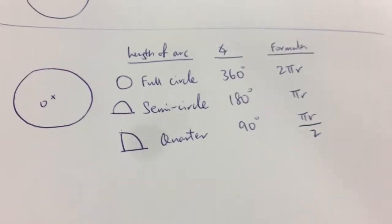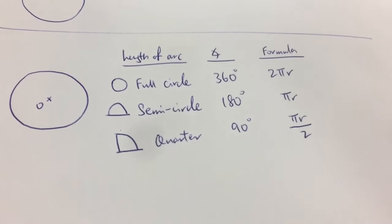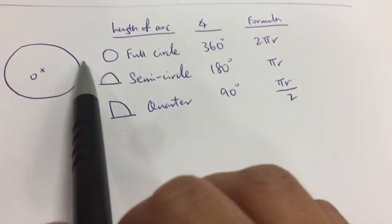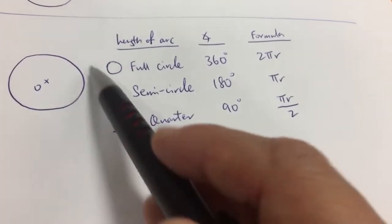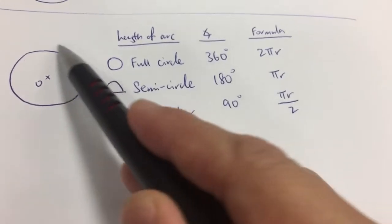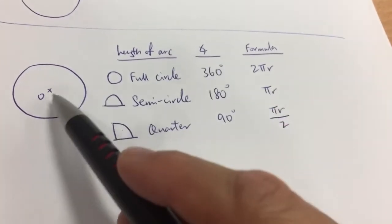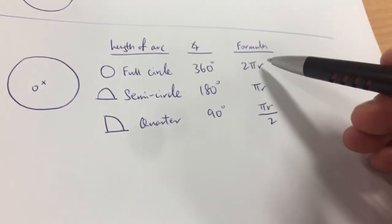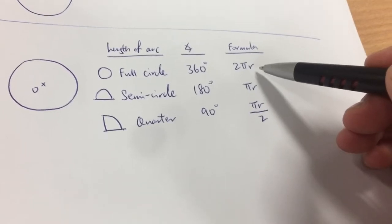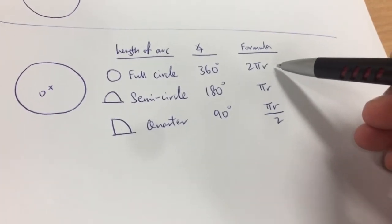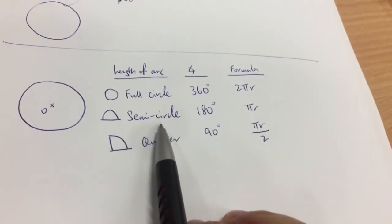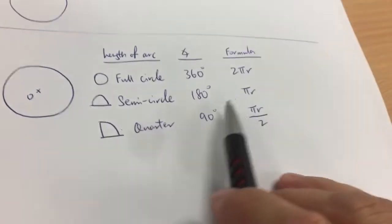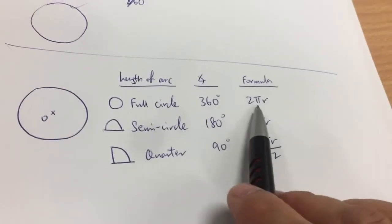I'm going to share with you basically the formula — how we derive the arc length formula. I'll start with something we all know. If I want to ask you what is the length of the circumference of a full circle, a circle has an angle of 360 degrees — one whole round. The formula for finding the circumference of a circle is 2πr, which you learned in primary school. So if I ask you the arc length for a semicircle — half a circle — we know it's 180 degrees, so it's πr. Simply divide by 2.